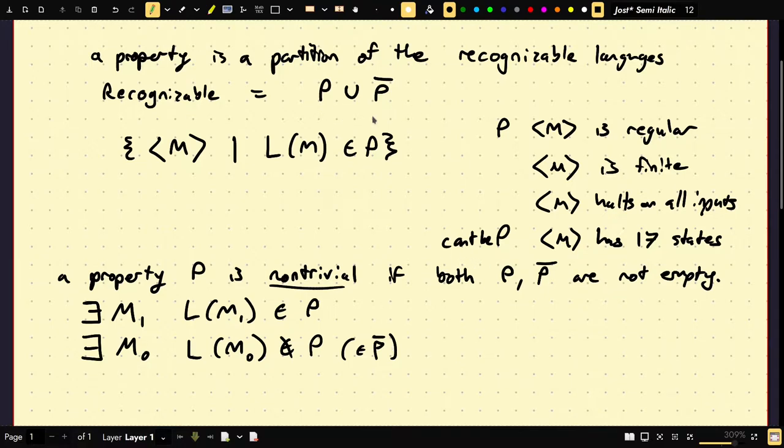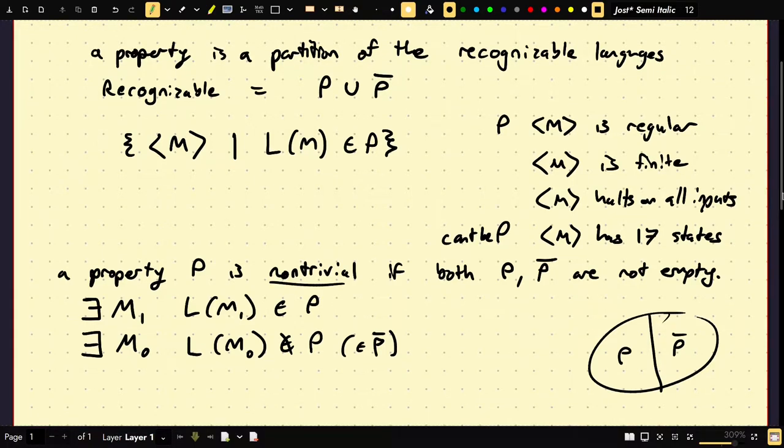So that's what we mean explicitly by property. Second, by most, I kind of really meant non-trivial. Property P is non-trivial if both P and P complement are not empty. Another way to say this is there exists M1 such that the language of M1 is in P and there exists M0 such that the language of M0 is not in P.